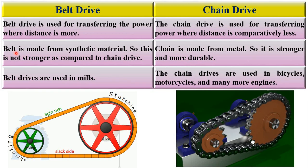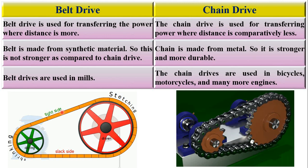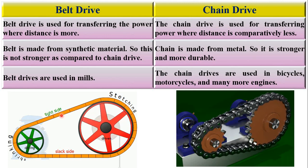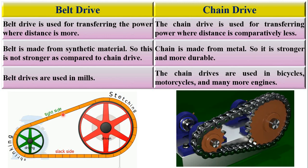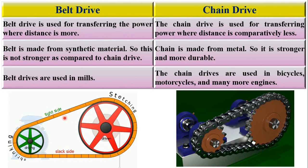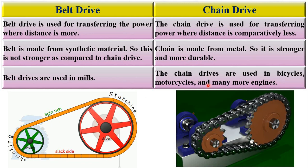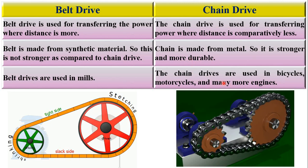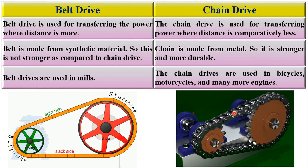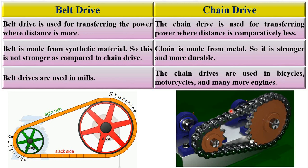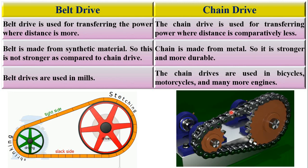Belt is made of synthetic material, so it is not as strong compared to chain drive. Chain is made from metal, so it is stronger and more durable.